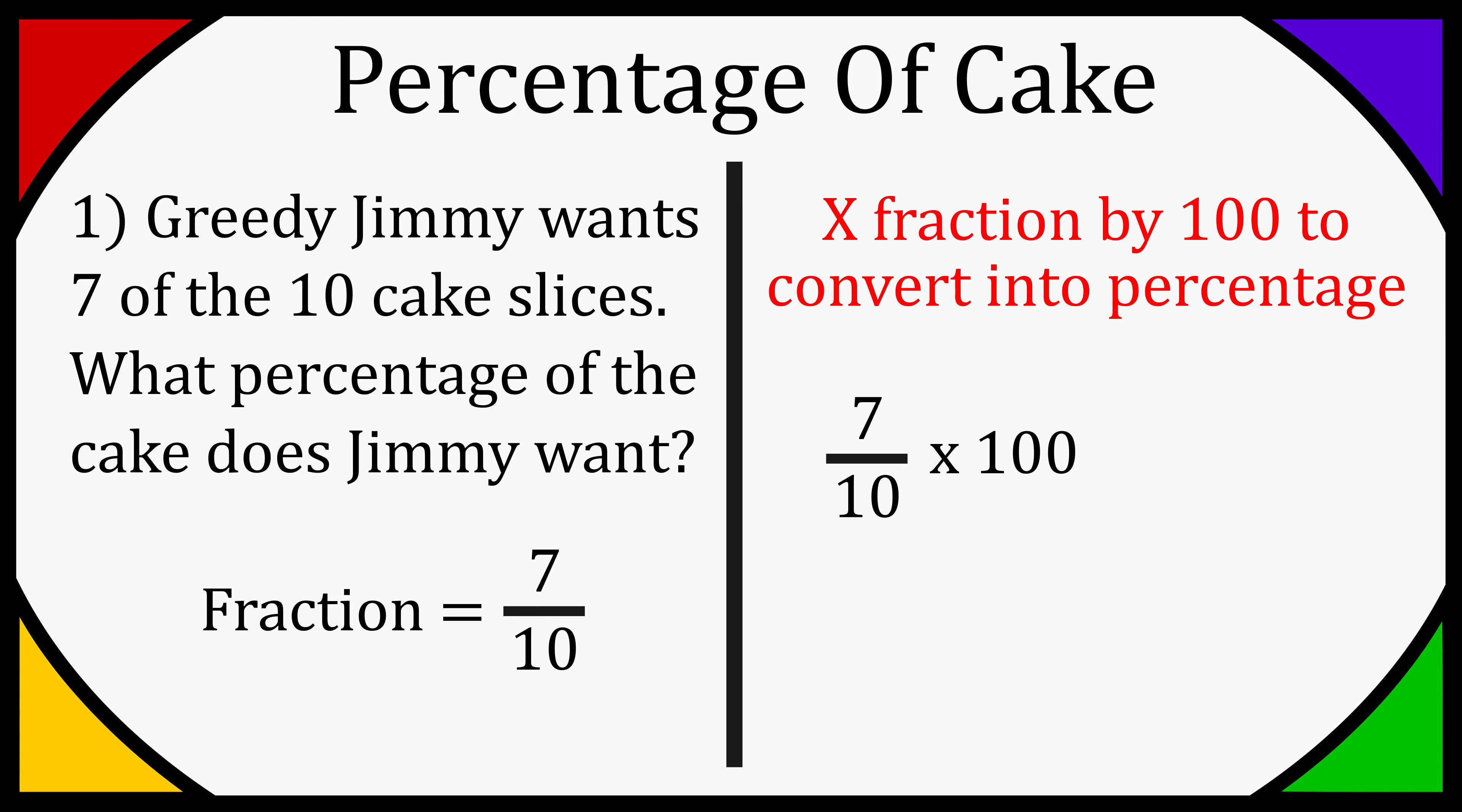Now you can work this out by hand, you can just times the top by 100, so that'd be 700 over 10, and cancel out the zeros, we'll give you 70, or you can just pop it into a calculator. So 7 over 10 times 100 is going to be 70%, so Jimmy wants 70% of the cake.